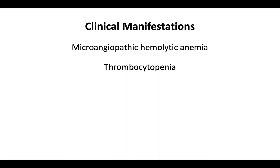The widespread distribution of platelet microthrombi in various organs affects the brain and manifests as neurologic changes. Neurologic changes can be subtle, as seen with confusion and headache. However, more severe transient focal neurologic changes can occur, such as difficulty speaking, numbness, weakness, seizures, and coma.